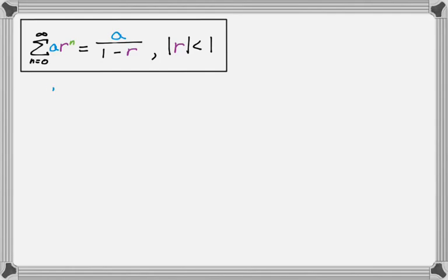I actually have it memorized a slightly different way. What I prefer to use is the first term over 1 minus the ratio. It saves you when instead of starting at n equals 0, it starts at n equals some other number.